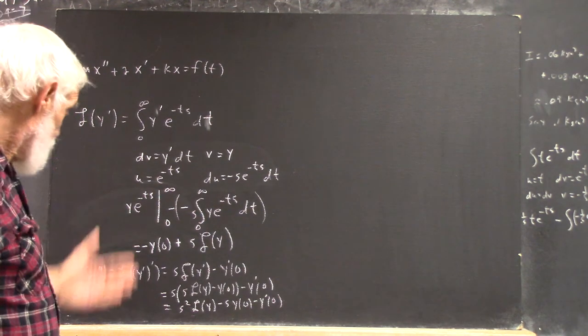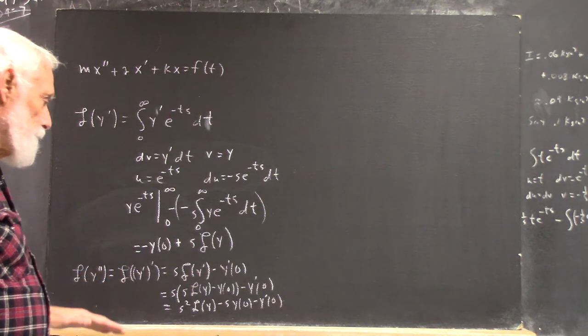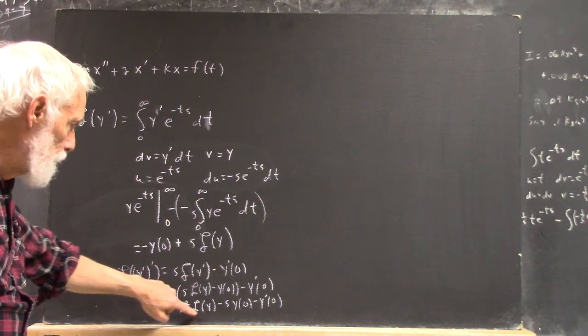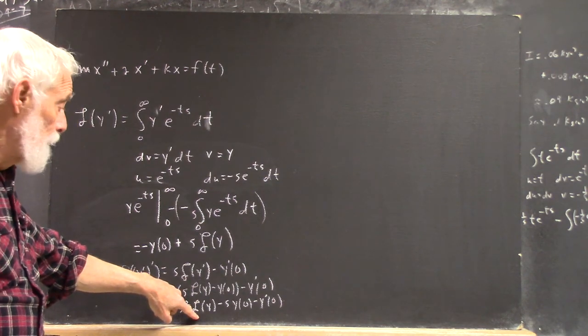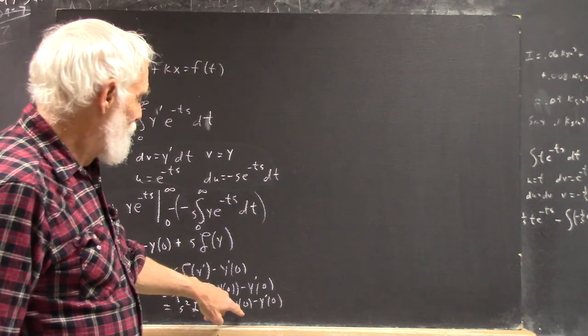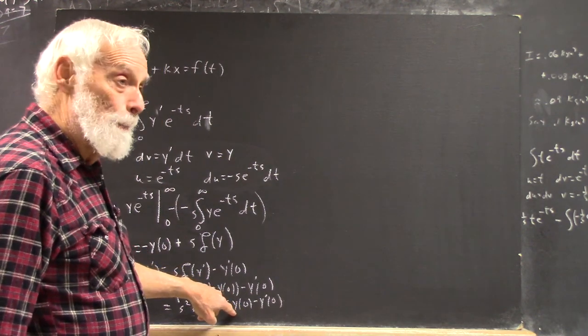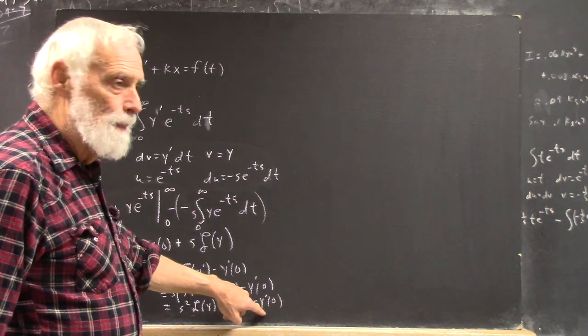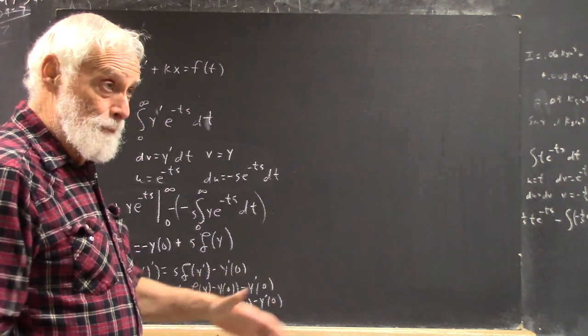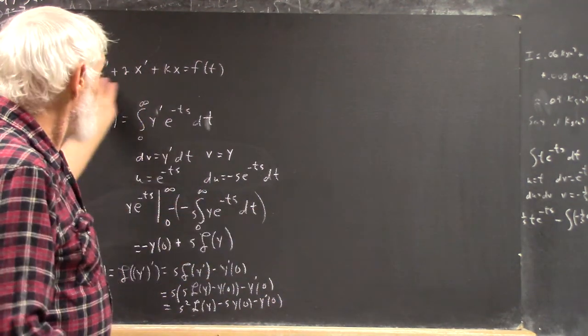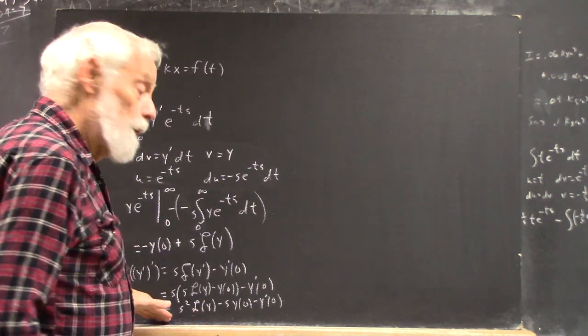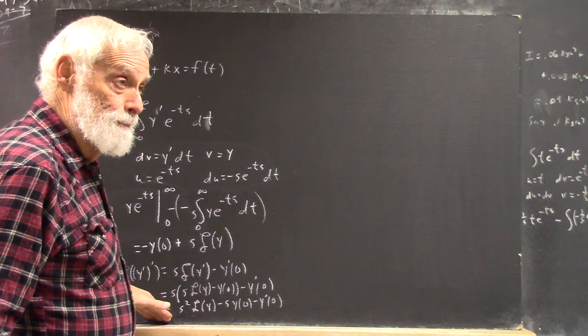So you're getting s squared L of y minus s, and that should be, yes, s y of zero minus y prime of zero. And you can write out this process for a step or two, and you're going to see how your power of s always increases here. You're always going to get another s times the y and another s times whatever each derivative is in the preceding. So if you have a higher order equation, you can easily figure out what the transform ought to be.